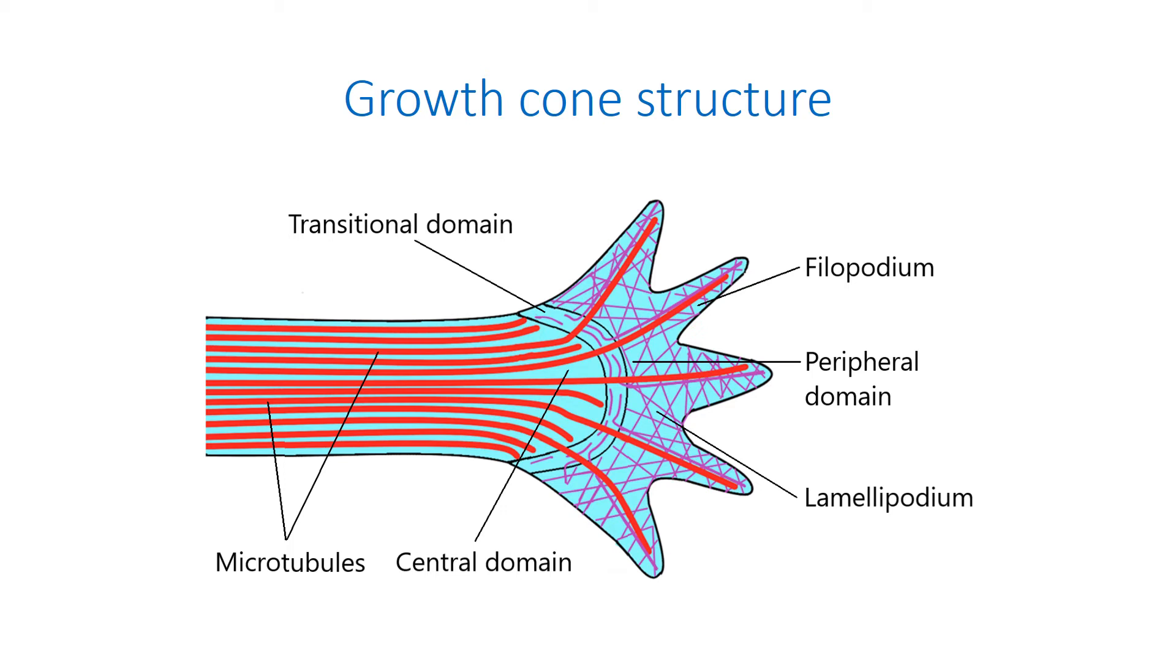The transitional domain is located between the central and the peripheral domains and contains the so-called F-actin arcs. They form a mechanochemical barrier for microtubules attempting to invade the peripheral domain.